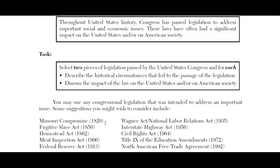The Missouri Compromise of 1820 tried to deal with the problem of slavery before the Civil War. The big obsession was how to keep the number of slave states and free states equal so one wasn't outnumbering the other. Missouri was going to enter as a slave state, so the compromise allowed Maine to enter as a free state to keep the balance. After that, any new state north of Missouri's southern line would be free, and south of it would be slave.